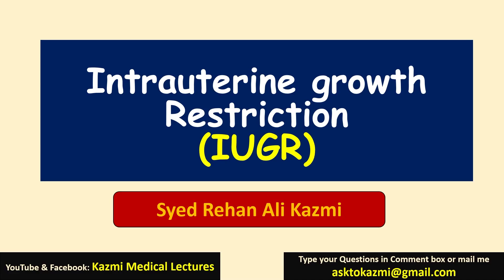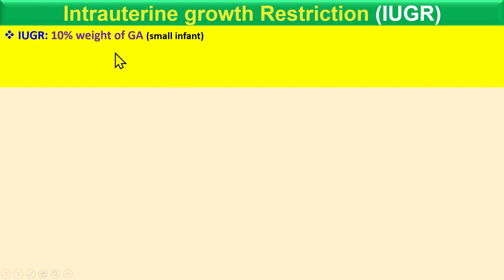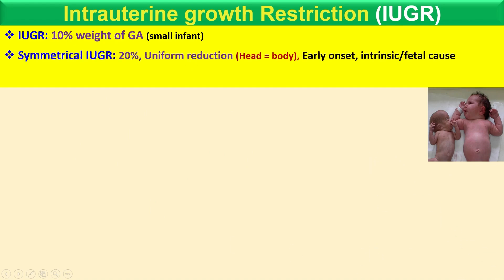We are talking about intrauterine growth restriction — when there is a restriction in the growth of the fetus. Intrauterine growth restriction (IUGR) is defined when the weight of the fetus is below the 10th percentile for gestational age. This results in a very small infant, as can be seen in the image shown.